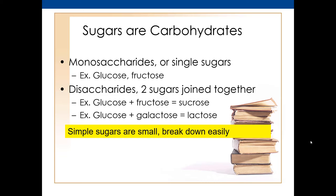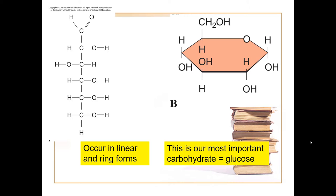Simple sugars are small, break down easily, get into your bloodstream quickly, and give you a quick burst of energy — but it doesn't last long. When carbon gets five or six carbons together it can form a ring. Our most famous carbohydrate is glucose. Most food — whether protein, lipid, nucleic acid, or carbohydrate — eventually gets broken down to glucose, which is then used to make ATP.